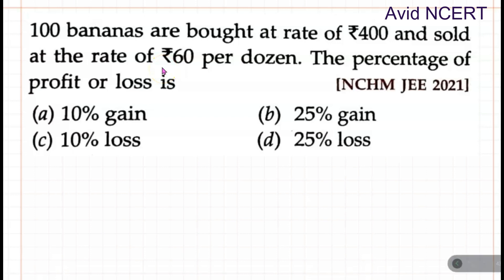Hello everyone, welcome to my channel. This is Geeta. Today we'll be solving a question from NCHM JEE 2021 question paper. 100 bananas are bought at a rate of rupees 400 and sold at the rate of rupees 60 per dozen. The percentage of profit or loss is?